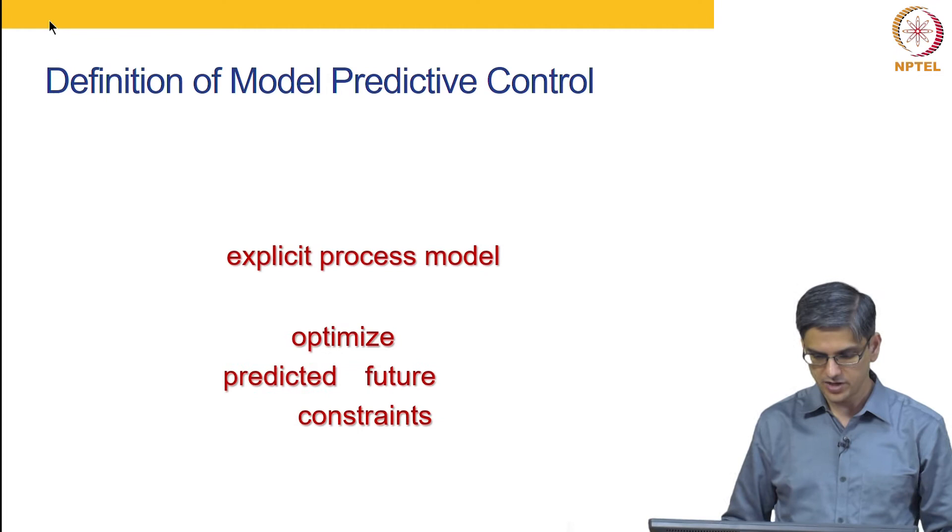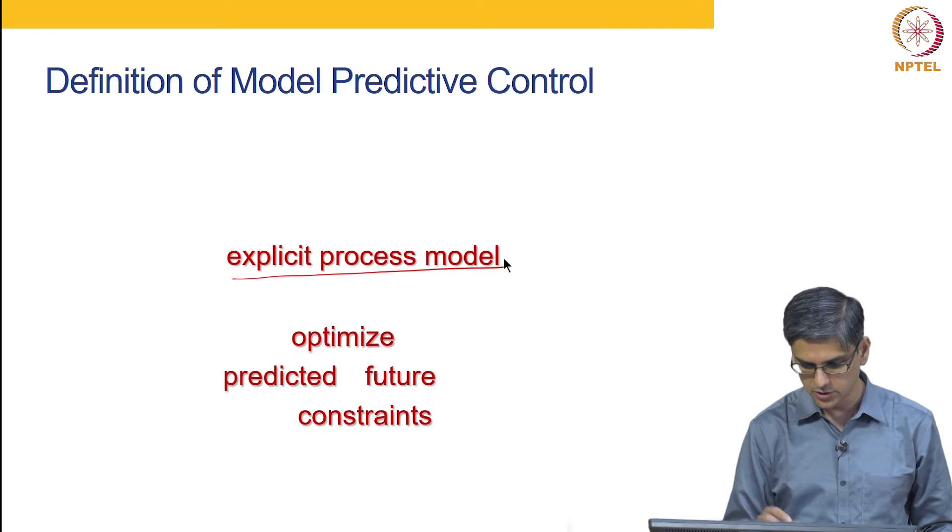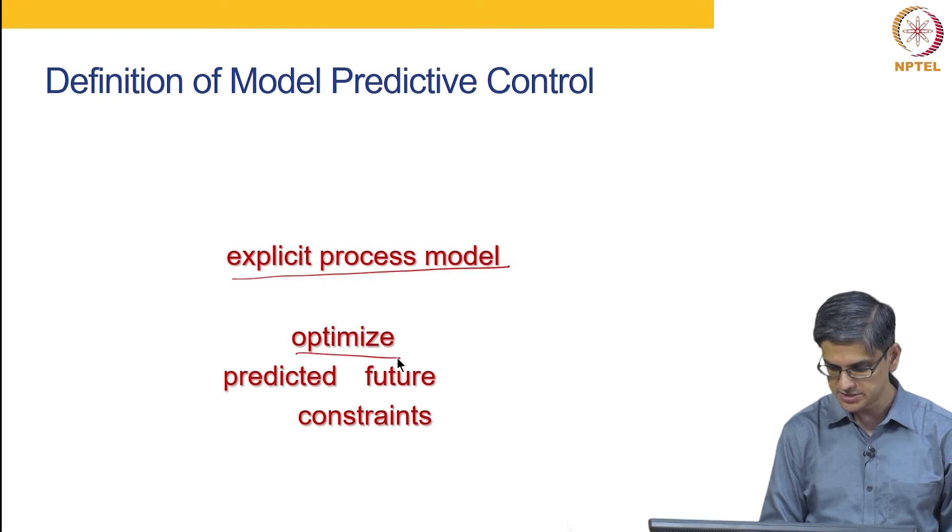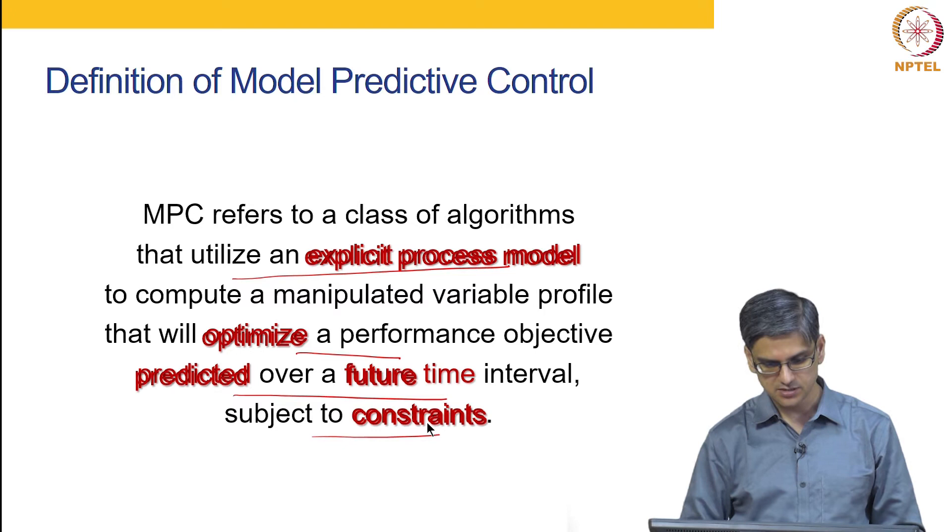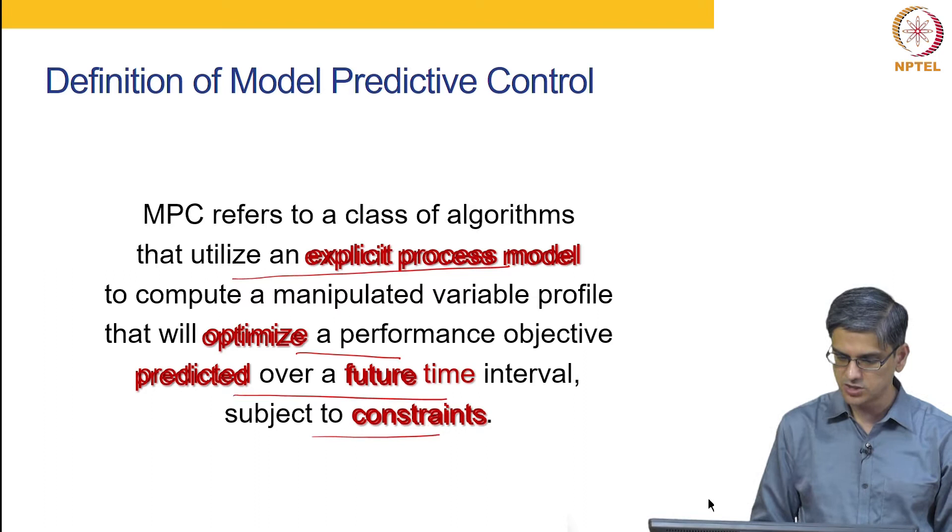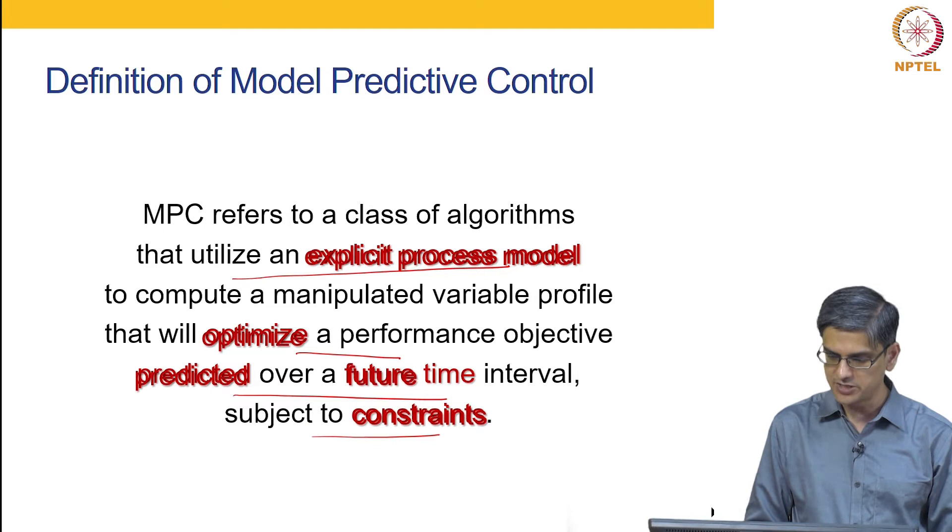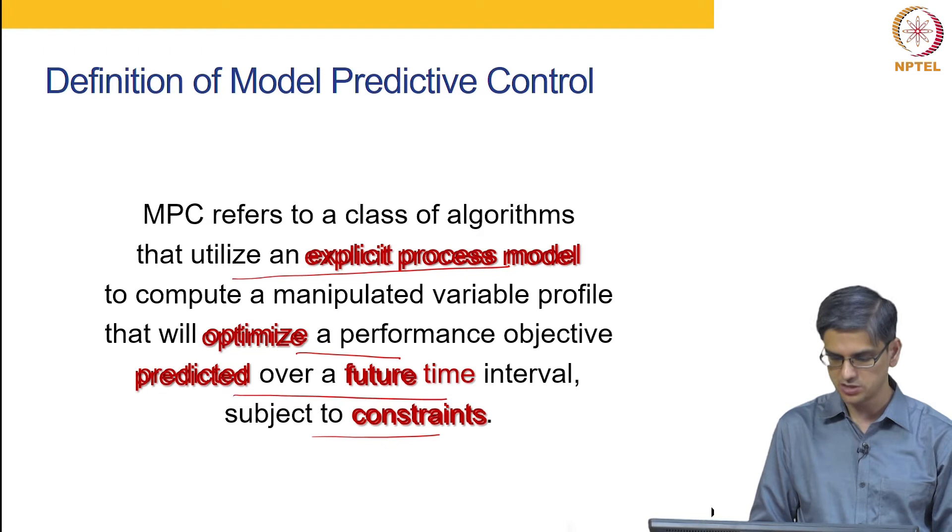Definition of MPC. The more important keywords for MPC are: it uses an explicit process model, it is an optimization based algorithm, and it uses model for predicting the future and is able to handle the constraints. MPC refers to a class of algorithms that utilize an explicit process model to compute a manipulated variable profile that will optimize a performance objective predicted over a future time horizon subject to constraints.